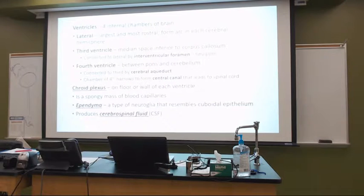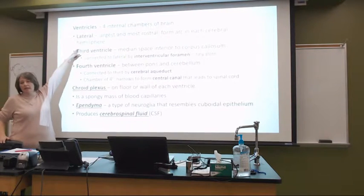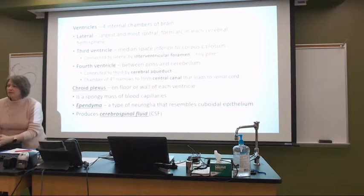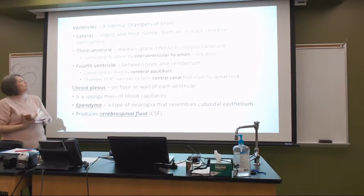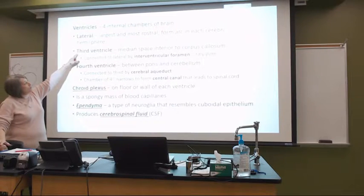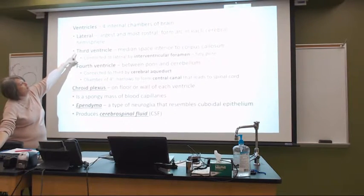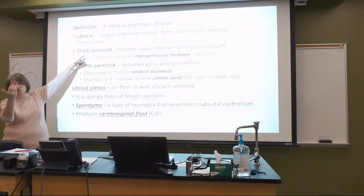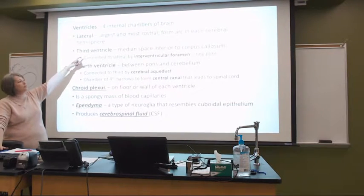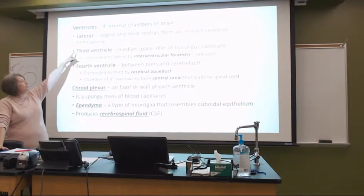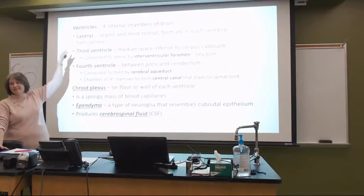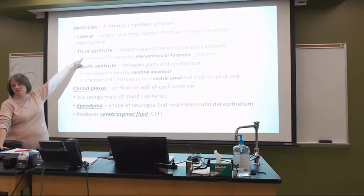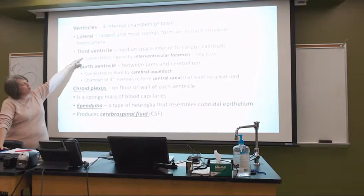Those are referred to as ventricles one and two. Once we get past ventricles one and two, which are termed our lateral ventricles because they're going to be lateral in the brain tissue. They're the largest. They are the most rostral, meaning towards the front. They form an arc in each of the cerebral hemispheres.